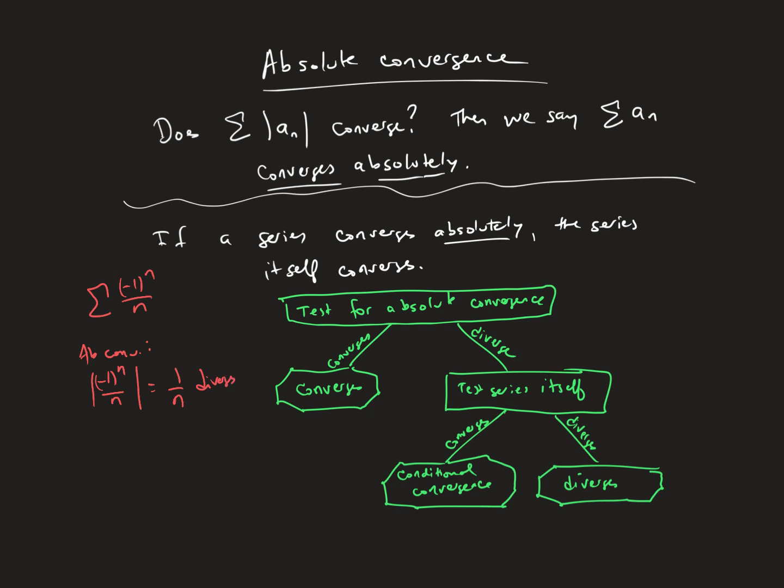So that would follow this path. So then we'll be testing the series itself. Now, the series itself is an alternating series. So we use the alternating series test. So it's alternating. Thing 1 is confirmed. If I looked at the individual terms without the negative 1, so like 1, 1 half, 1 third, 1 fourth, 1 fifth, they would consistently decrease. So that's condition number 2. And then the limit as n goes to infinity of 1 over n is 0. So that's condition number 3 satisfied. So the series itself converges.